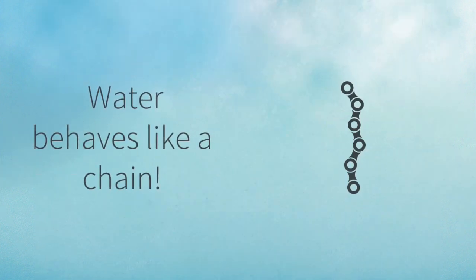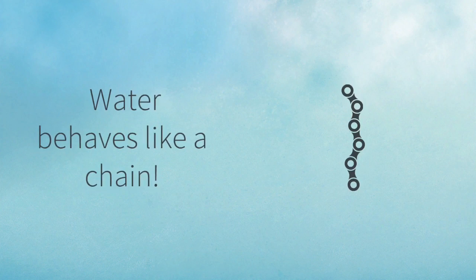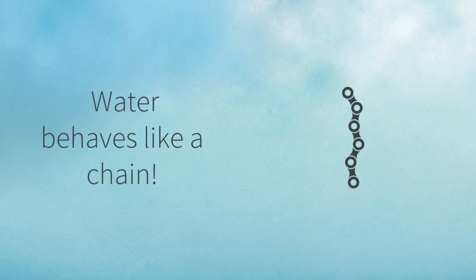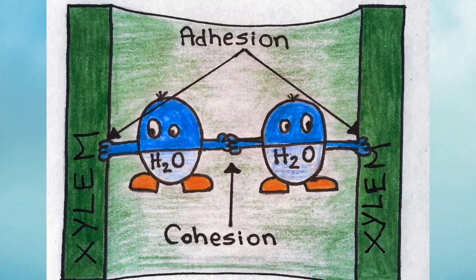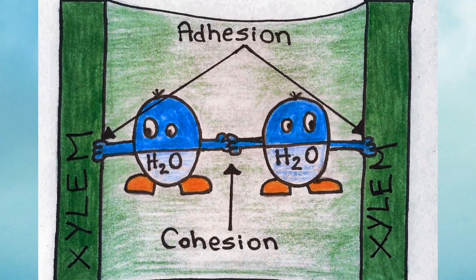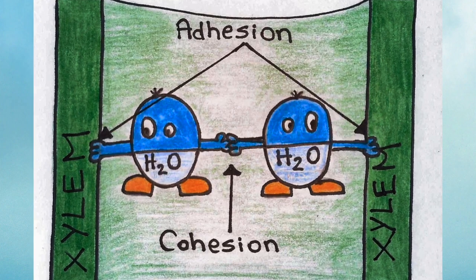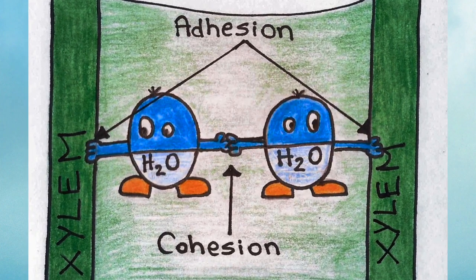And because water behaves like a chain, it pulls other water molecules upwards through the plant to fill the space of the water that's just evaporated. So why does, or how does, water behave like a chain? Well, it's basically all down to these two properties of water, adhesion and cohesion.